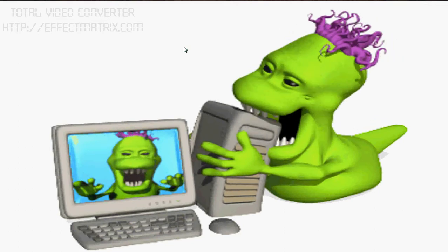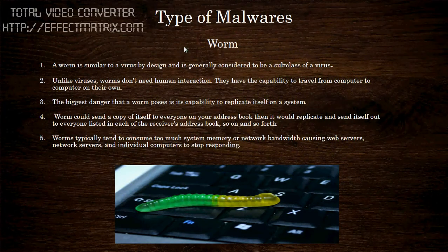Unlike a virus, a worm does not require human interaction or additional support to execute by itself. Once your computer is infected by a worm, it will self-replicate and then start spreading from one machine to another through vulnerable sources. If your operating system is not patched with the relevant patches, it may get into your machines very easily. From there, it will scan other machines to find out whether they are also vulnerable.